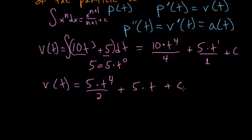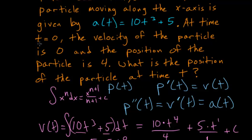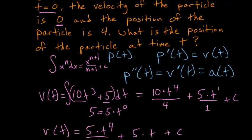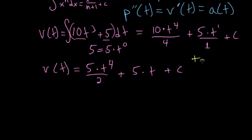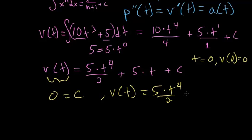We have to figure out what this constant is, and the way to do that is to go back to the original problem. We're given that at time t = 0, the velocity of the particle is 0. So plugging in: 0 = (5/2)(0⁴) + 5(0) + C. Both terms have a 0, so they go to 0, and C must equal 0. So our velocity function is simply v(t) = (5/2)t⁴ + 5t.